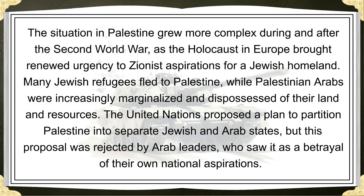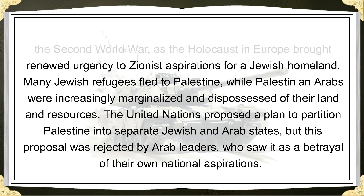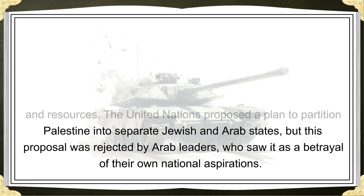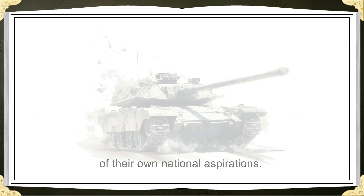The situation in Palestine grew more complex during and after the Second World War, as the Holocaust in Europe brought renewed urgency to Zionist aspirations for a Jewish homeland. Many Jewish refugees fled to Palestine, while Palestinian Arabs were increasingly marginalized and dispossessed of their land and resources. The United Nations proposed a plan to partition Palestine into separate Jewish and Arab states, but this proposal was rejected by Arab leaders, who saw it as a betrayal of their own national aspirations.